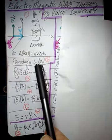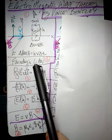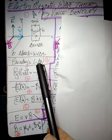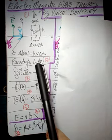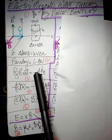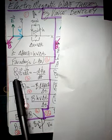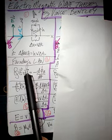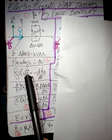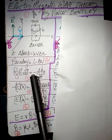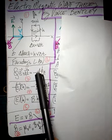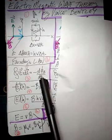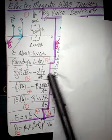We're going to use Faraday's Law, one of Maxwell's equations. Faraday's Law says the integral over a closed loop of the electric field dotted with the differential length vector is equal to negative the derivative of the magnetic flux with respect to time.